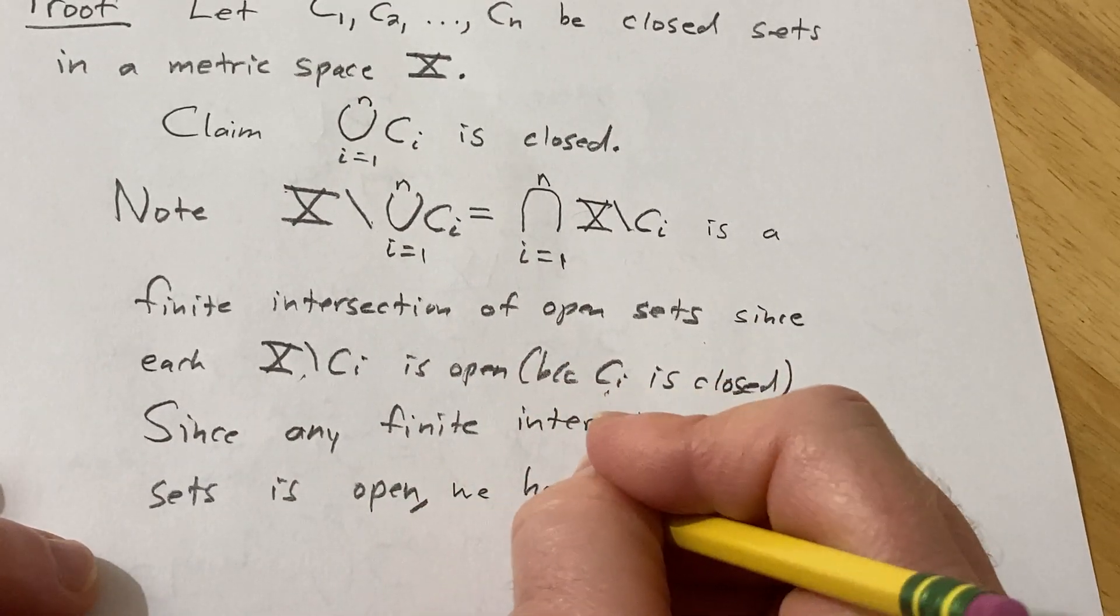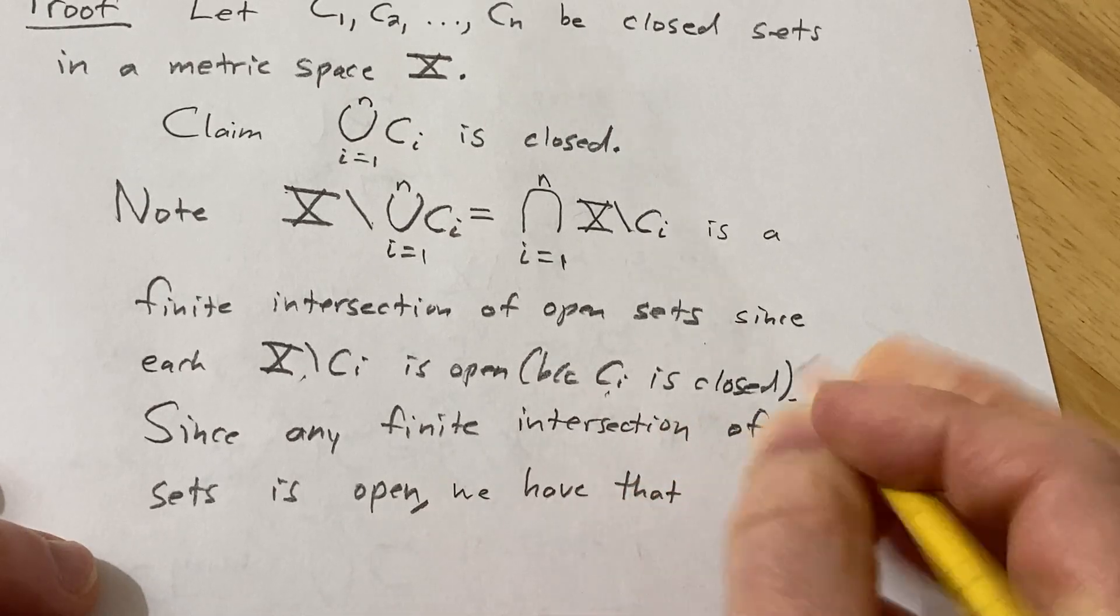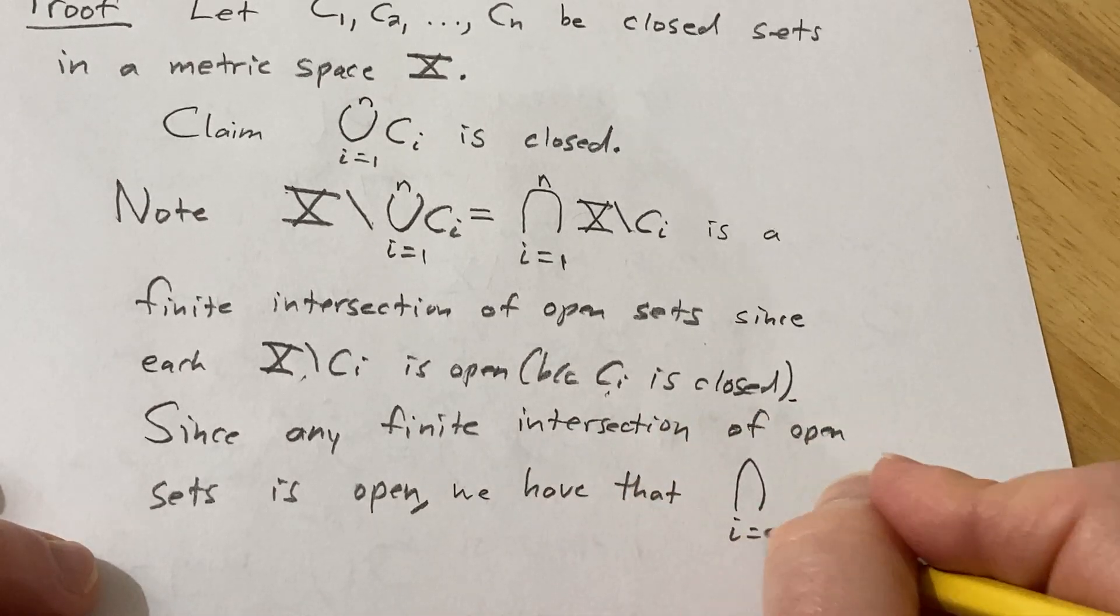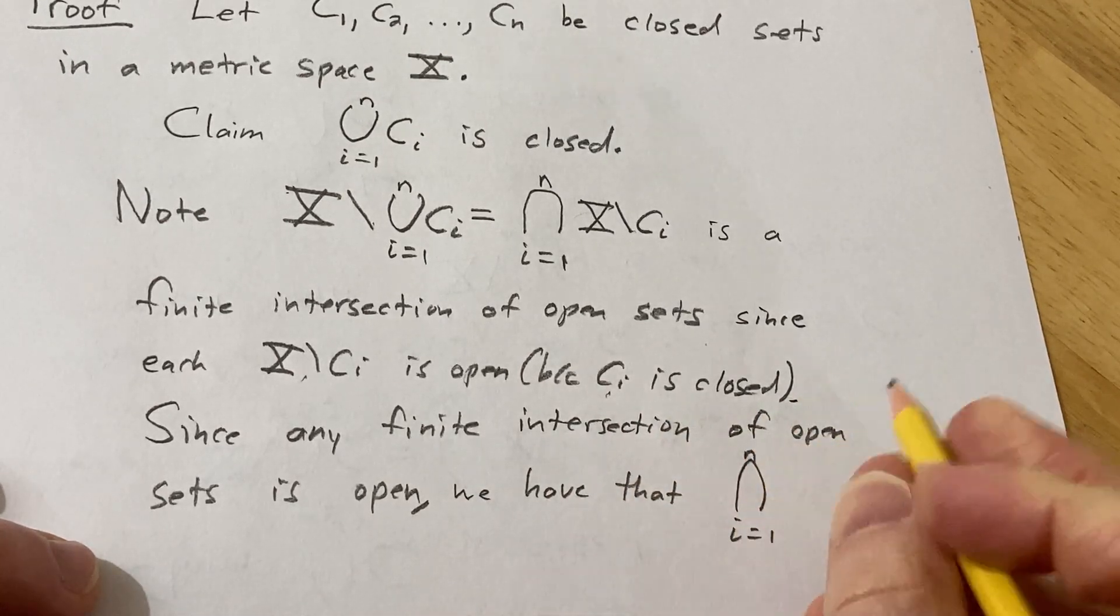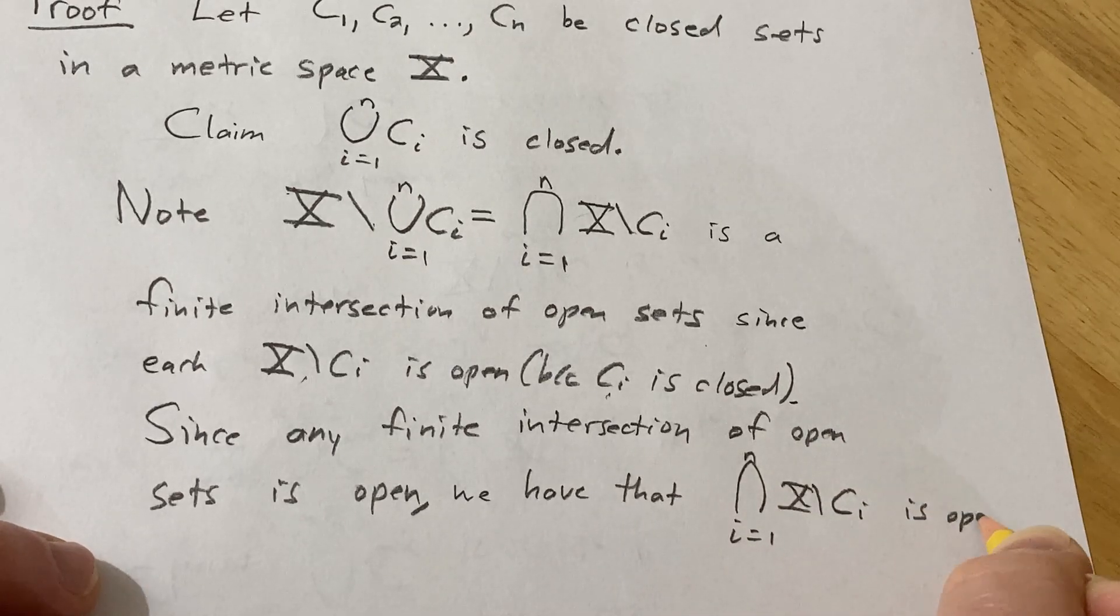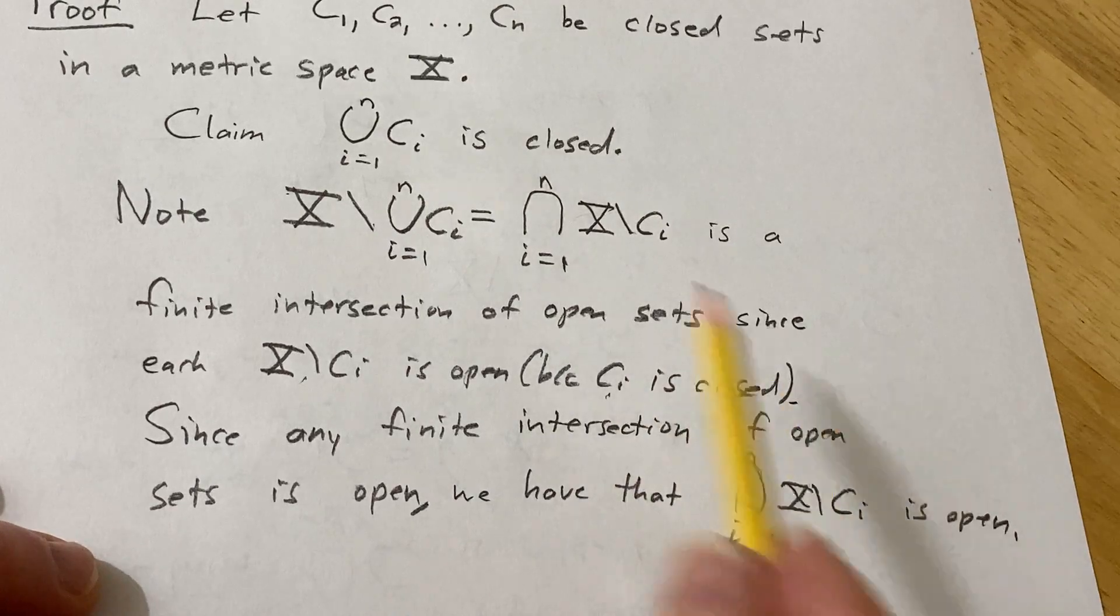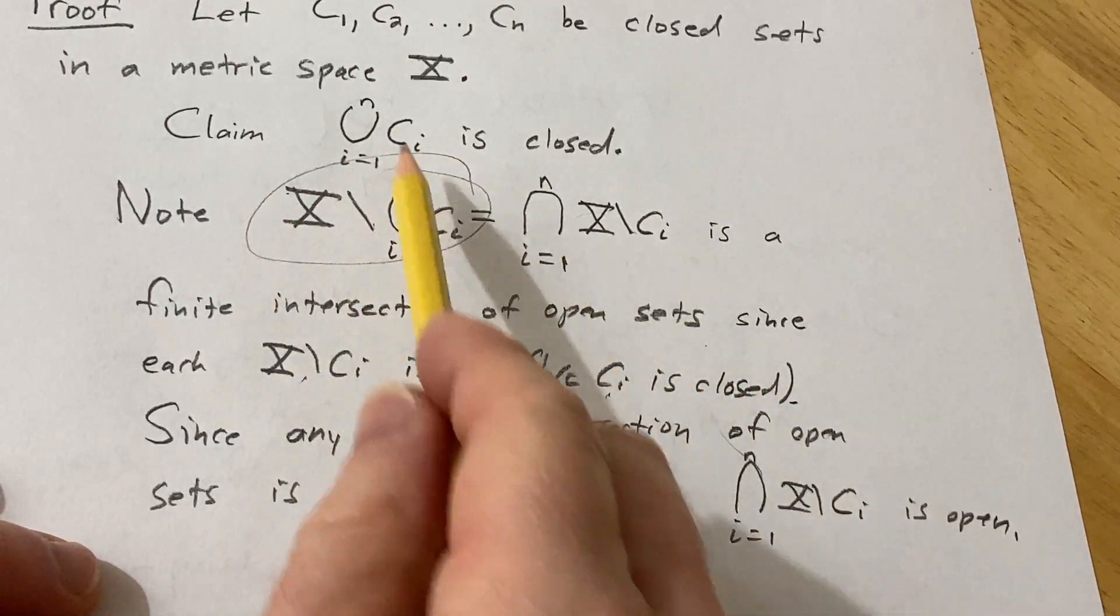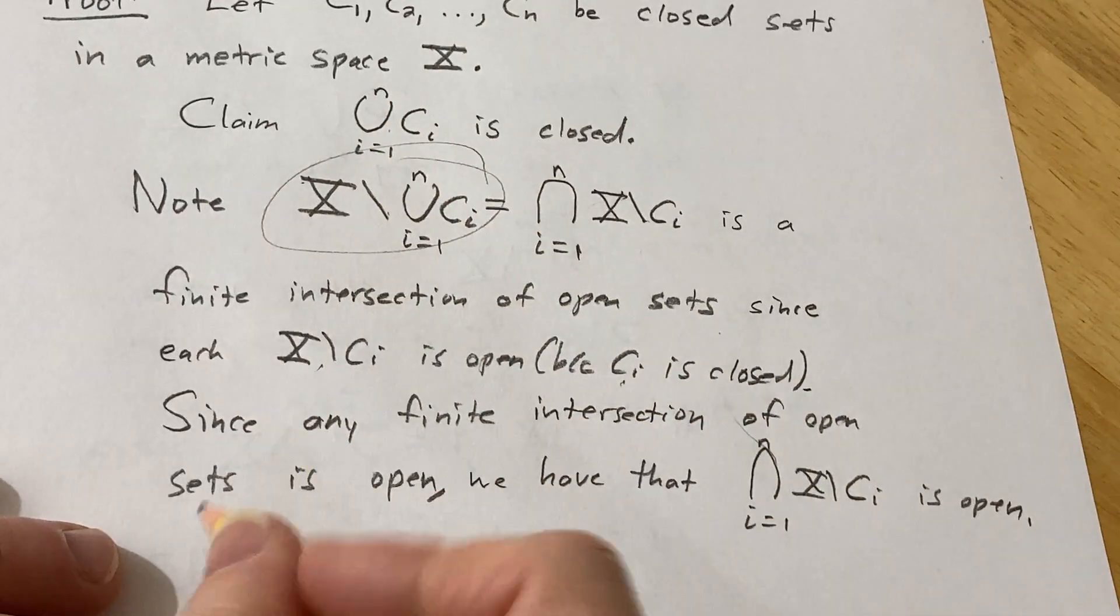we have that particular intersection, which runs from i equals 1 to n, X set minus C sub i is open. But that's the same as this, so therefore this is open, so therefore our original set is closed.